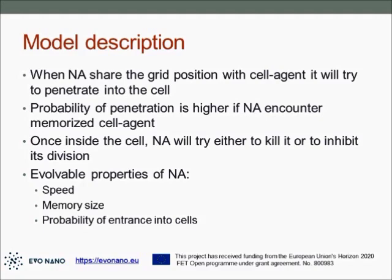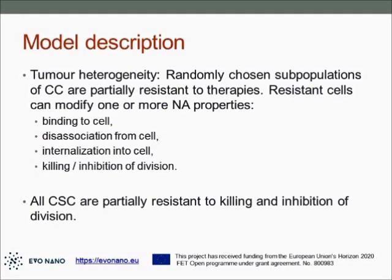Once inside the cell, the nano agent will try to either kill or inhibit division of the host cell. During the simulation, nano agents can evolve — they can change their speed, memory size, and probability of entering cells. Our main concern is tumor heterogeneity, and in this simulation we represented it as a randomly chosen subpopulation of cancer cells that are partially resistant to therapies. Resistance is manifested through either modifying binding of nano agents to them, modifying internalization rate, or altering killing or inhibition-of-division probability. At the same time, all cancer stem cells are partially resistant to killing.